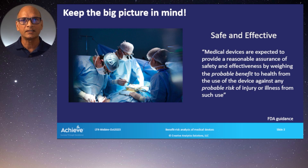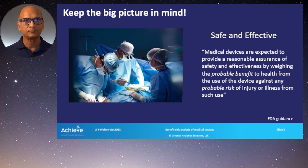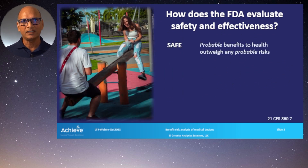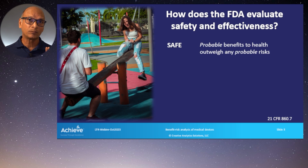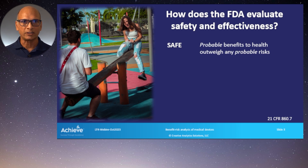The case study examples shared today may help clarify what's involved — it's not a perfect science. FDA evaluates safety as when probable benefits to health outweigh any probable risks. Note the key word 'probable' — this is not hypothetical, not just possible. We have to show data and evidence, and we have to consider probable benefits versus probable risks.